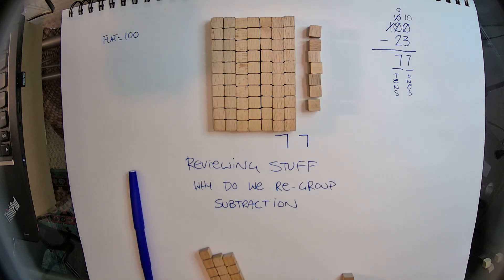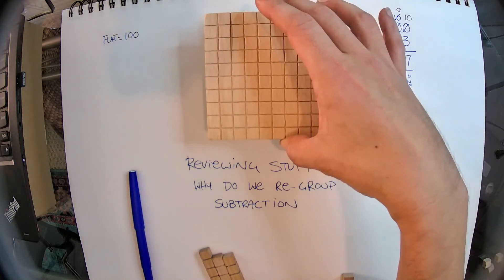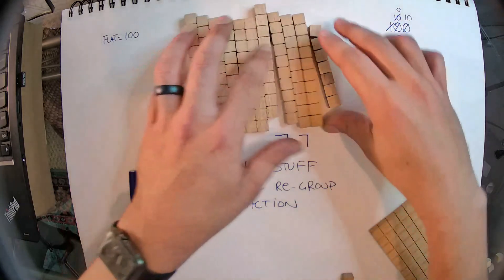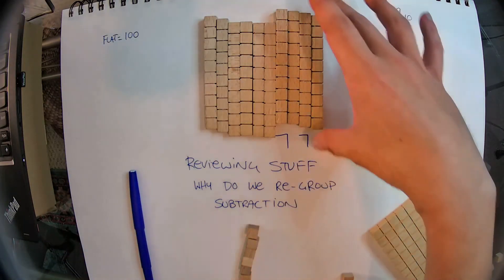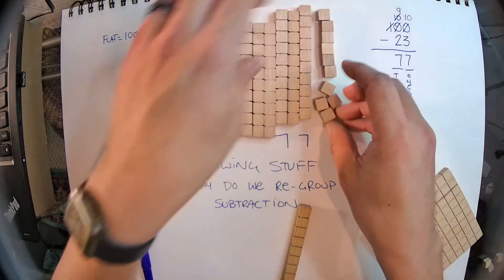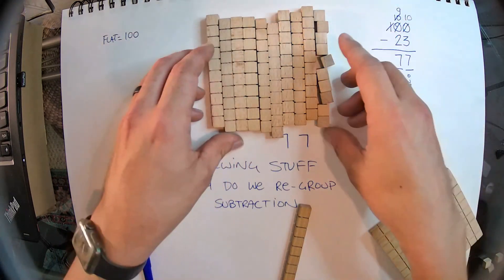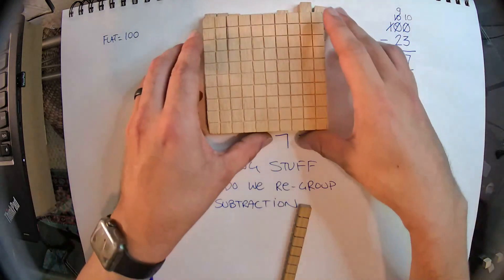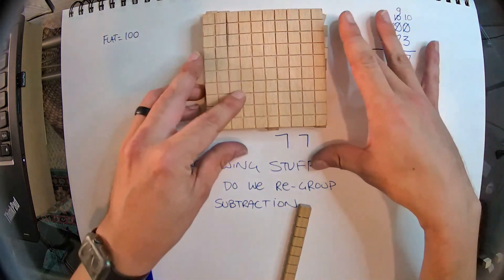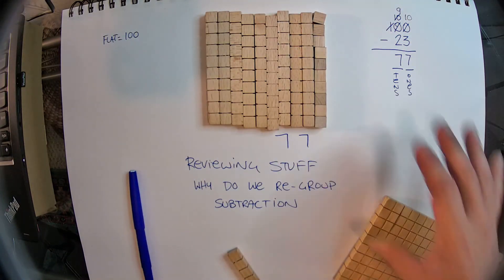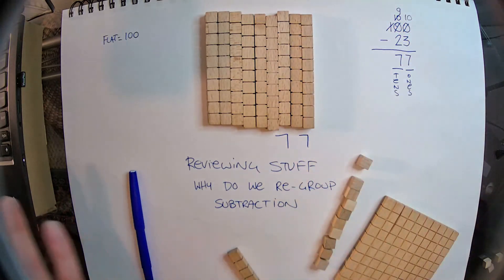So that's why we regroup - because we are turning 100s into 10 tens. And if we need to, we can turn one of our tens into 10 ones. So either way, we're still looking at 100, but we just broke it up into pieces. And that is why we regroup when we subtract. Thanks for hanging out. Bye!